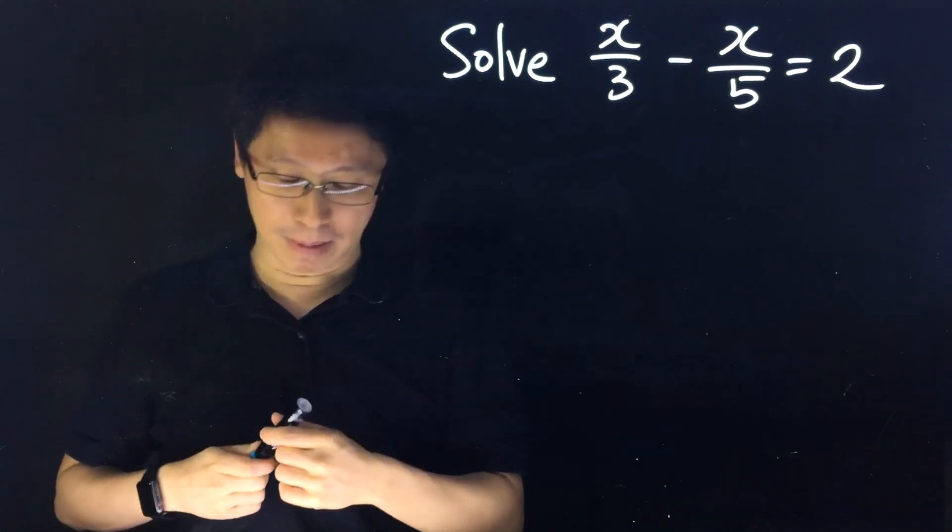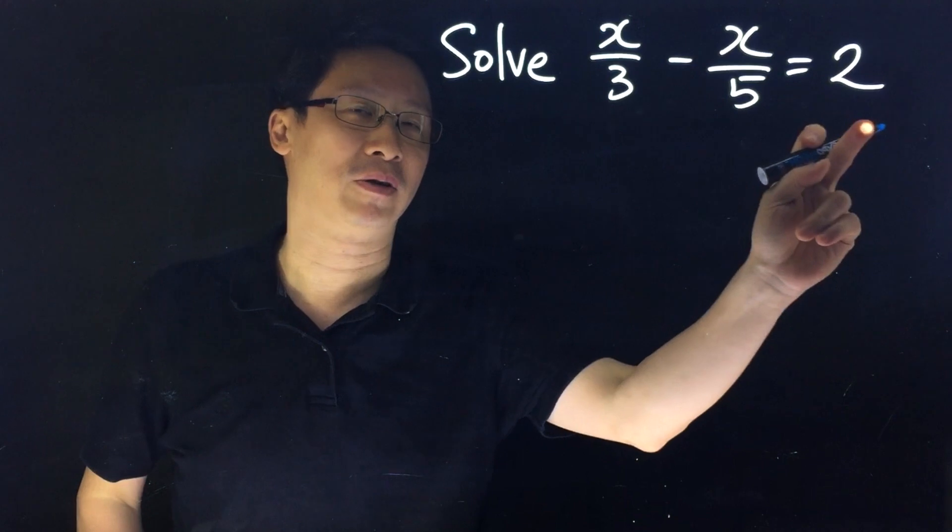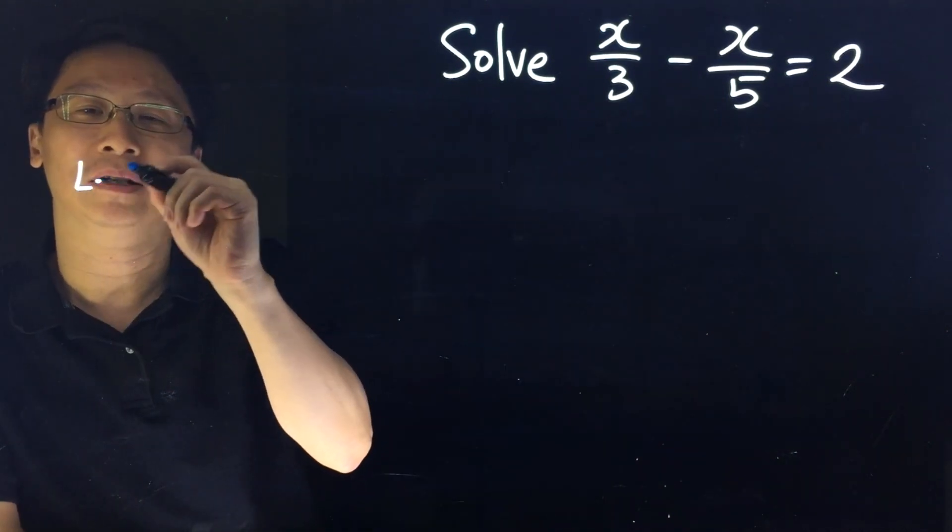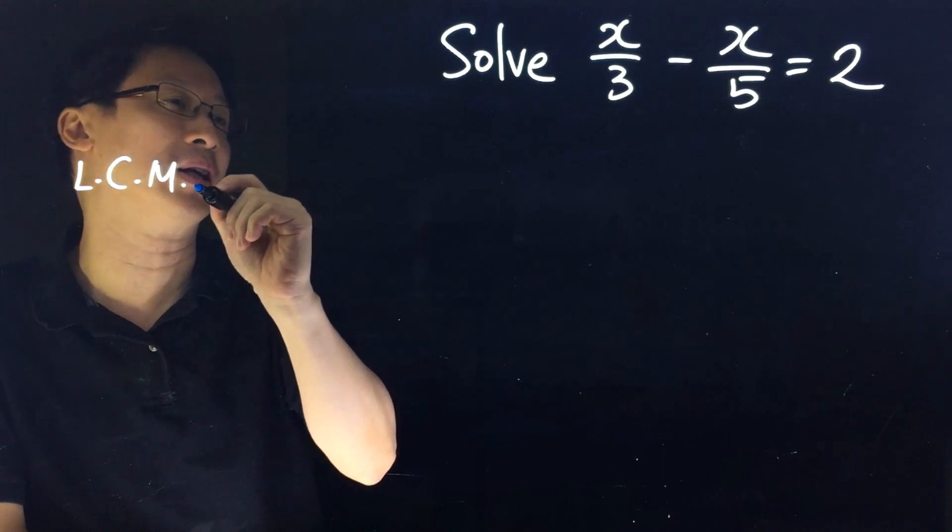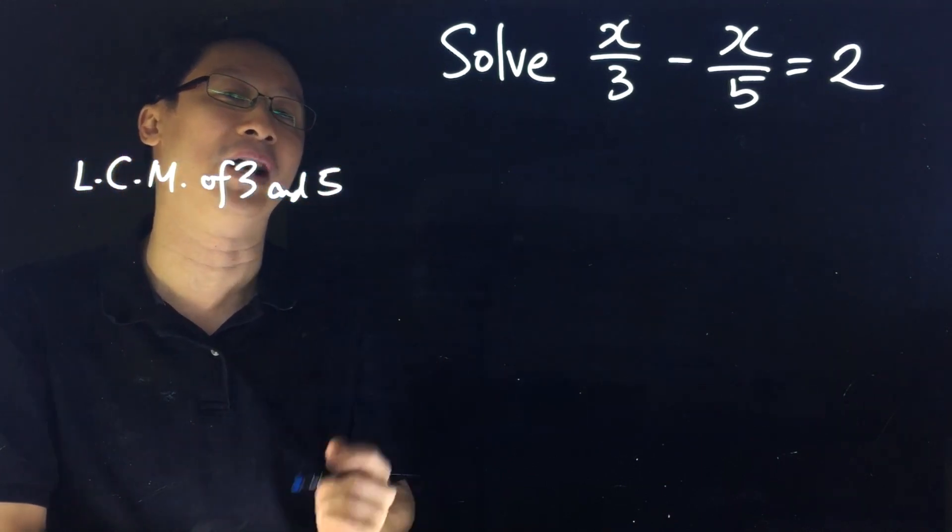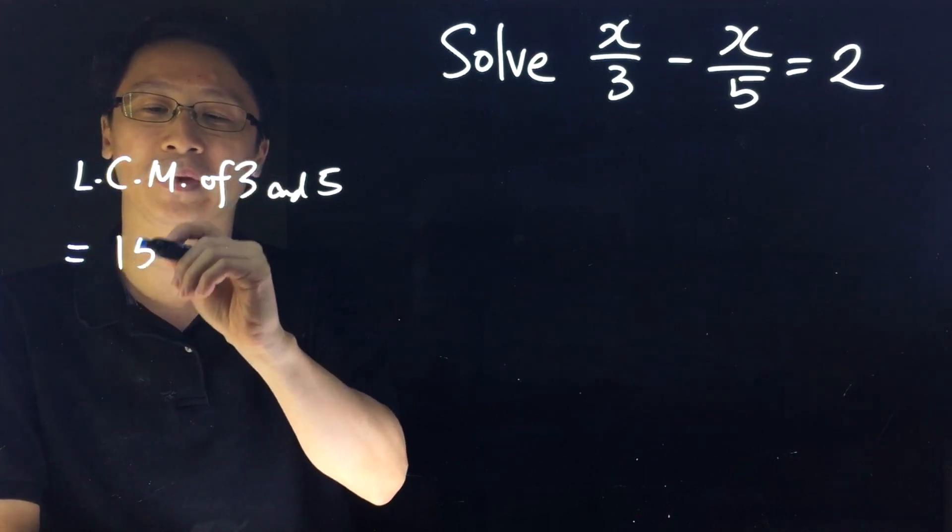We can multiply each term by a factor. The best way is to find the LCM of 3 and 5, which is 15.